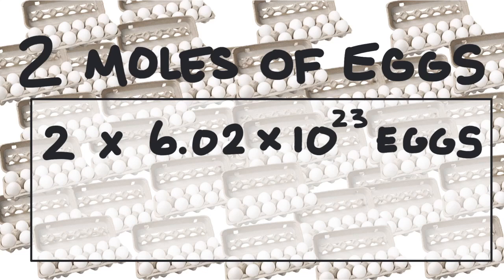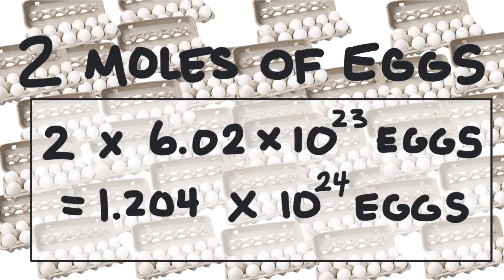This works out to 1.204 times 10 to the 24 eggs. But we really only use moles to measure really tiny things like atoms and molecules.